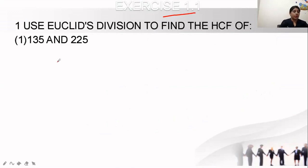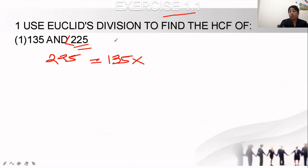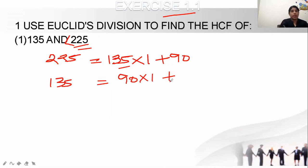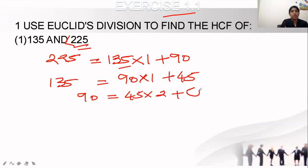Next: find the HCF of 135 and 225. The greater number is 225. By Euclid's Division Lemma: 225 equals 135 into 1 plus 90. Then 135 equals 90 into 1 plus 45. Then 90 equals 45 into 2 plus 0. Since the remainder is 0, the b value is 45. Therefore the HCF of 135 and 225 is 45.